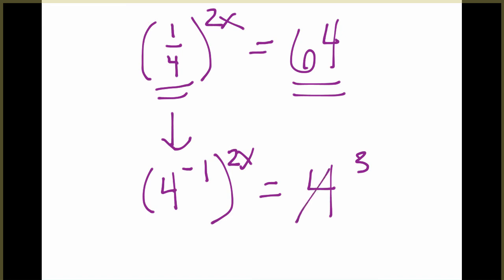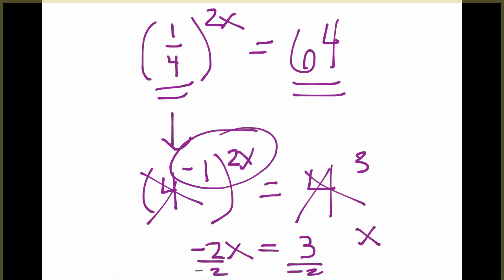Here, in the exponent, remember when you have a power raised to a power, you'll multiply, so that would become negative 2x equals 3. To solve for x, we'll just divide by negative 2, and x is equal to negative 1.5.